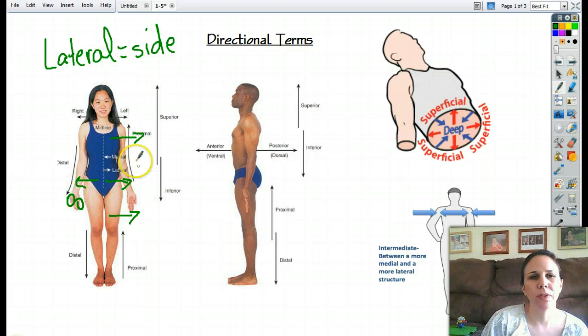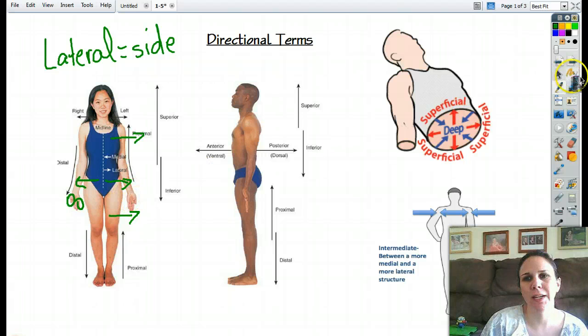And so in anatomical position, the thumb is always lateral to the pinky. Now, usually you don't walk around with your palms facing out, but the other way around. But in terms of making sure we all speak the same language, we always refer to the palms being out.